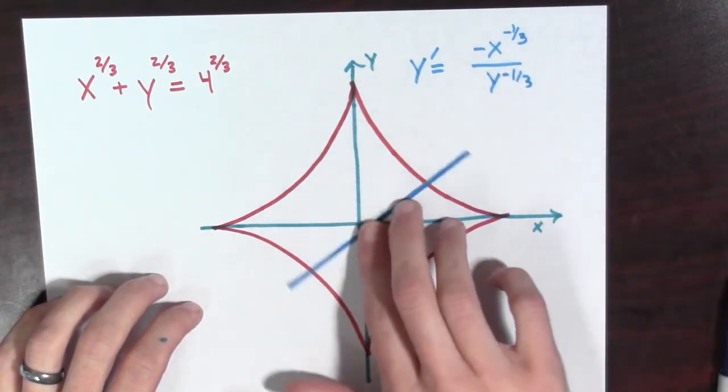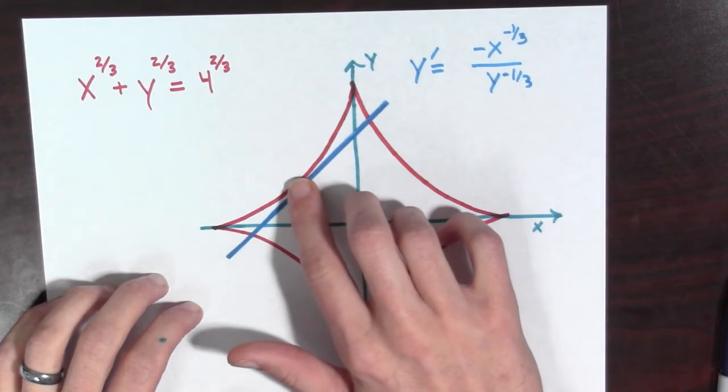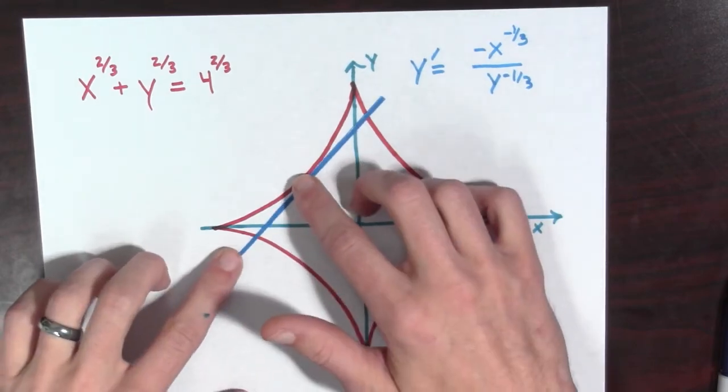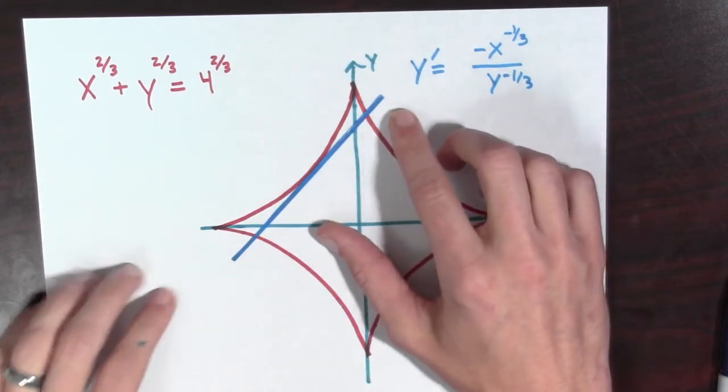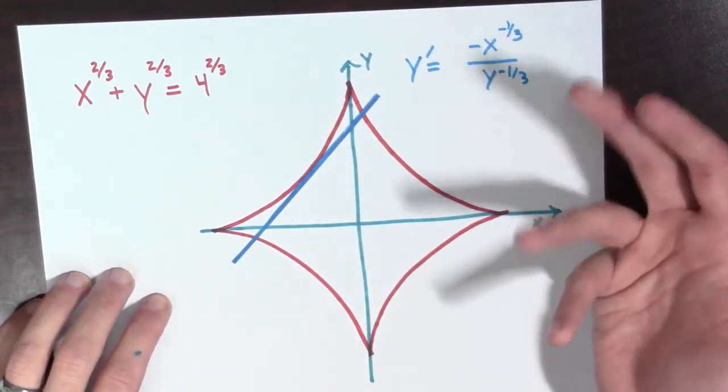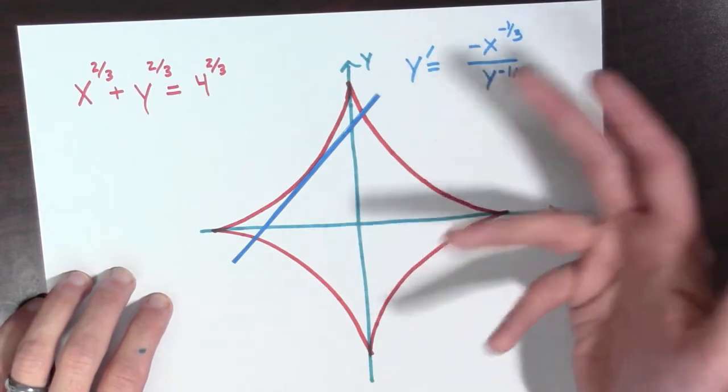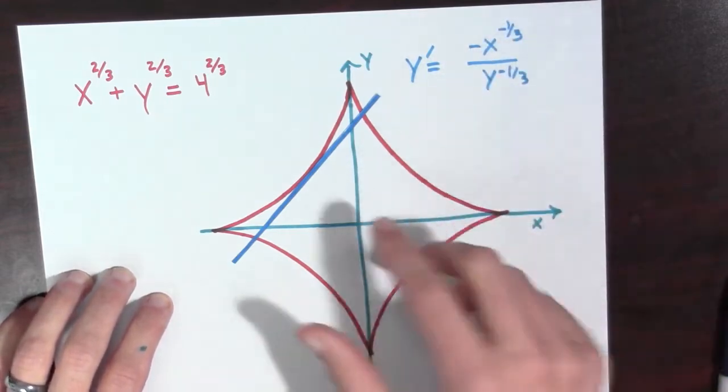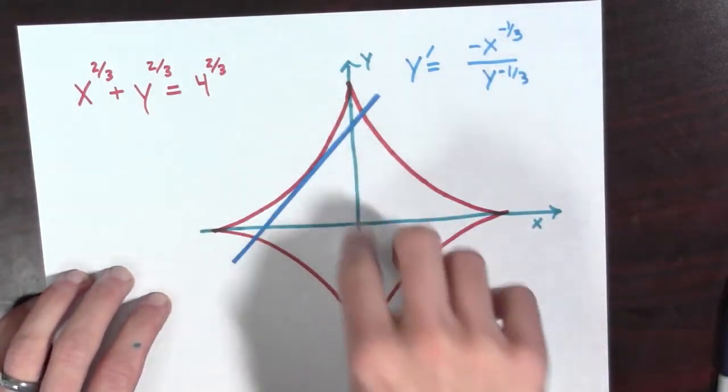On the other hand, if x is negative and y is positive, we're right around here. Suppose they're equal in magnitude. Then the slope should be 1. If x is negative, -x^(-1/3) is a negative number, negative times negative is positive, positive over positive is positive. So this is going to be positive 1.